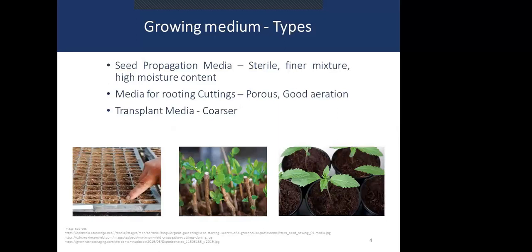In a seed propagation medium, it is used for seed germination, so it should be sterile enough, consist of a finer mixture of particles, and contain high moisture content. For root cutting media, it should be porous enough to allow root penetration and have good drainage to facilitate root growth. A transplant medium should be coarser, with good nutrient balance, good moisture content, and aeration to facilitate plant growth.